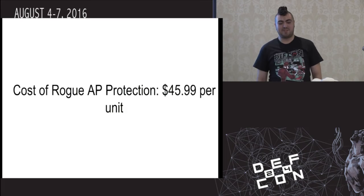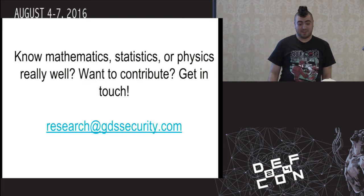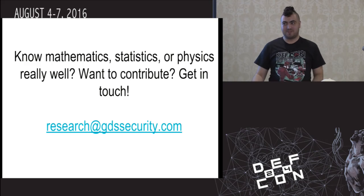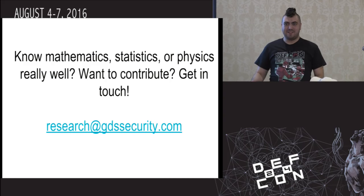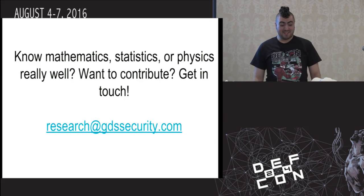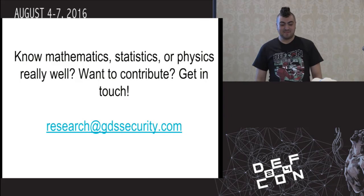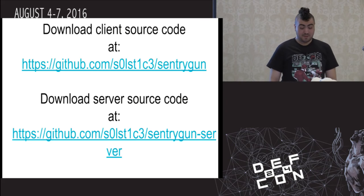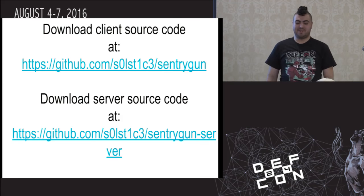That brings the cost of rogue AP protection down to about $45 per unit. One other thing: if you know math, statistics, or physics really well, that TX signal strength approach we described works pretty well, but it was built using pretty much hacker math. If you know actual math and want to contribute, feel free to send an email to research@gdssecurity.com. If you want to mess around with the source code, it's at github.com/solstice/centurygun, and you can get the server at solstice/centurygun-server. There will be a readme up there in an hour.